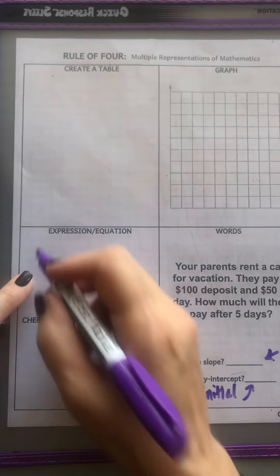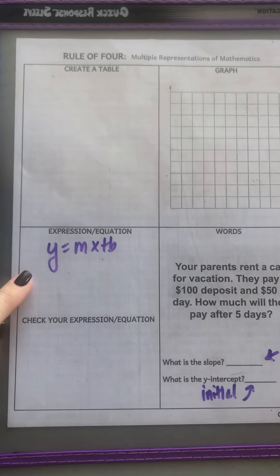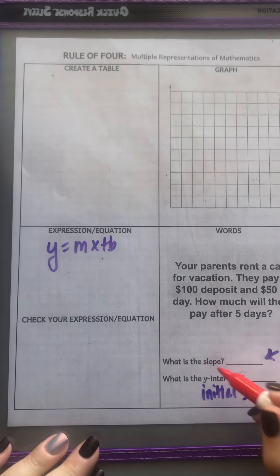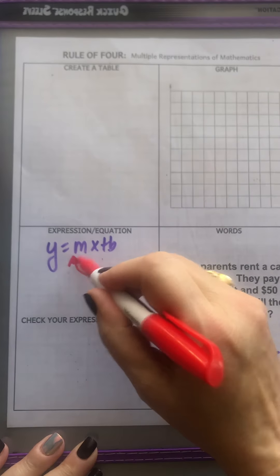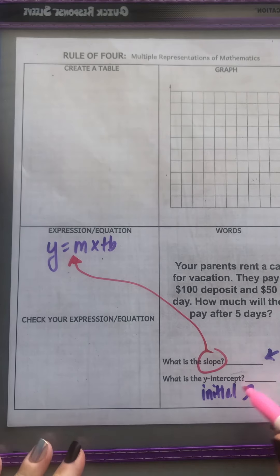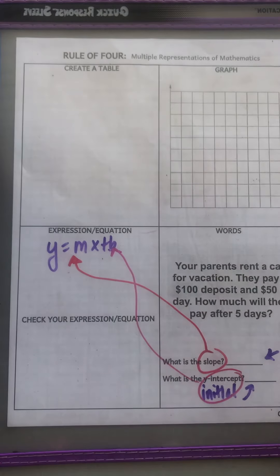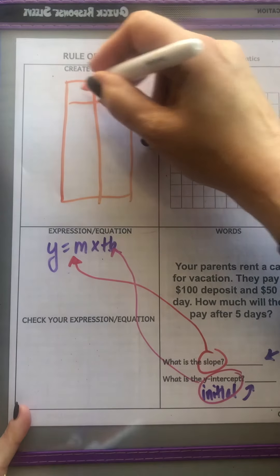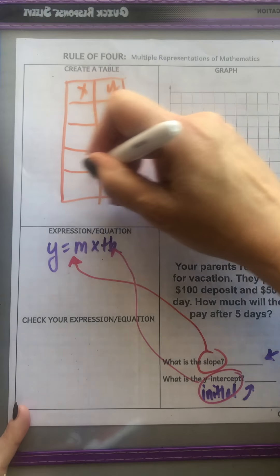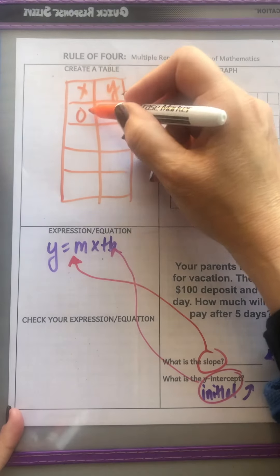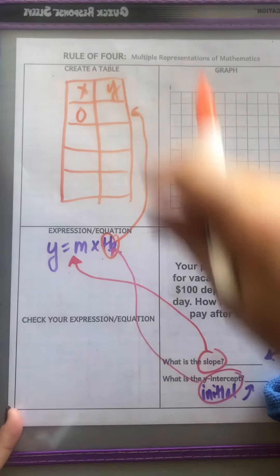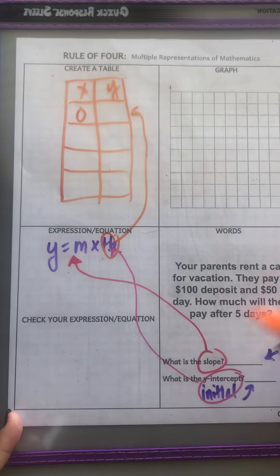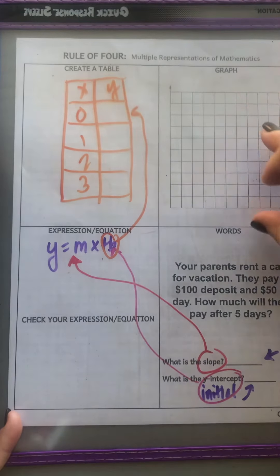When you write your expression, remember y = mx + b. Whatever your slope is, put that value in for m, and whatever your y-intercept is, put that in for b. Then based on your equation, build your table — x and y. You only need about three or four points. You know the y-intercept, so zero and that b value is already one point. Then figure out: after one day, two days, three days of vacation, how much are they paying total? Take that information and put it on the graph.